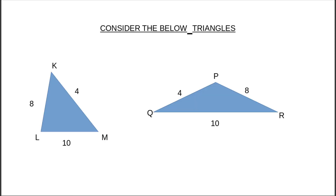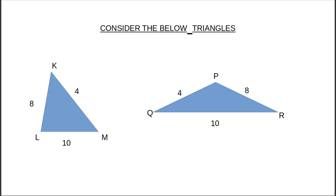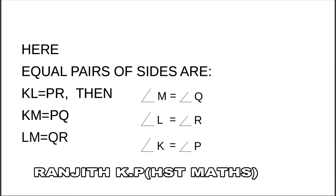For triangles KLM and PQR with equal pairs of sides, we find equal angle pairs: KL = PR gives angle M = angle Q; KM = PQ gives angle L = angle R; LM = QR gives angle K = angle P. The angles opposite to equal sides are equal.